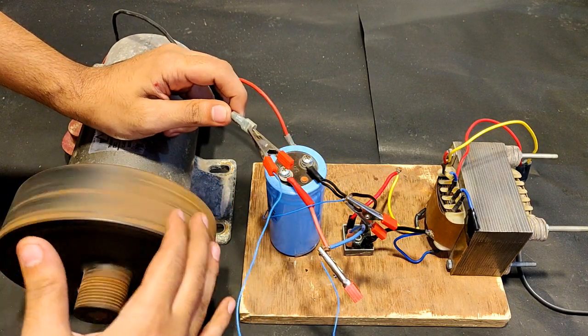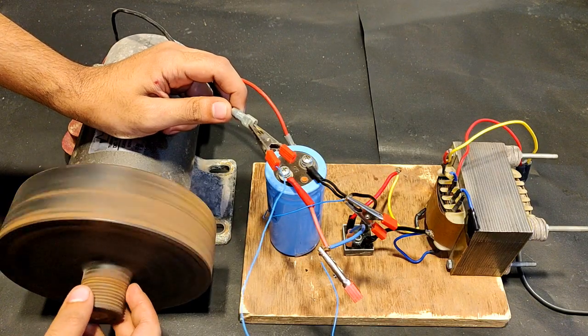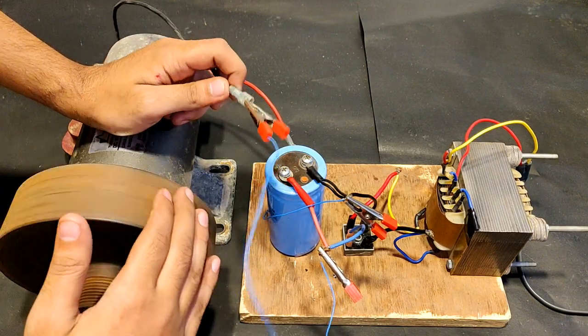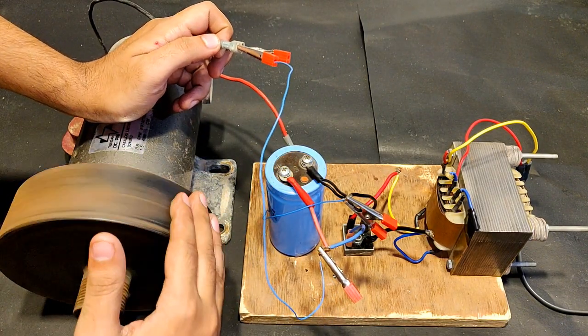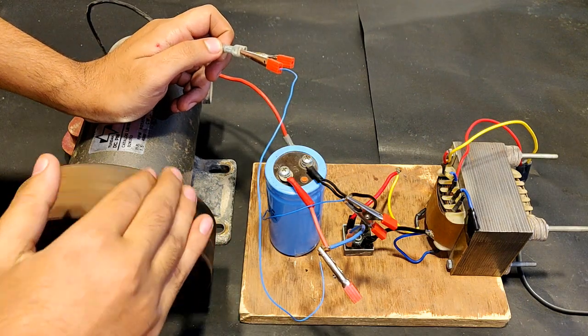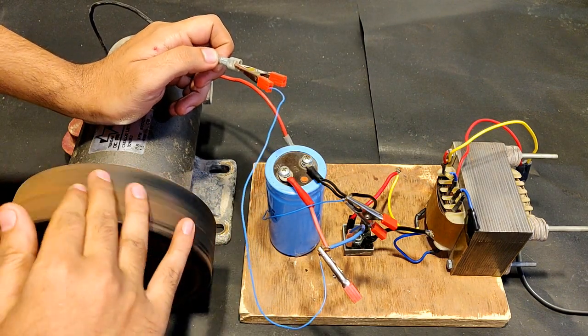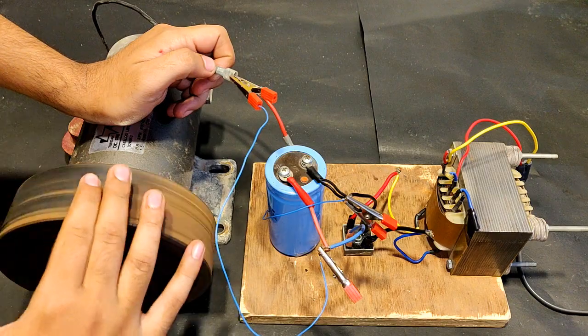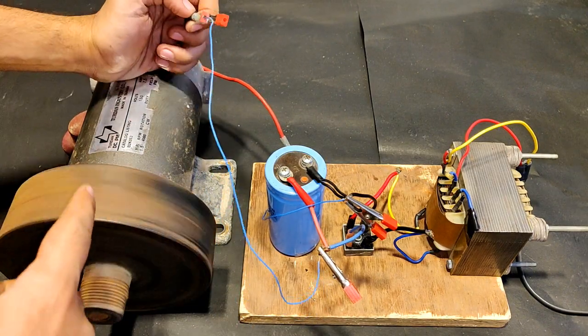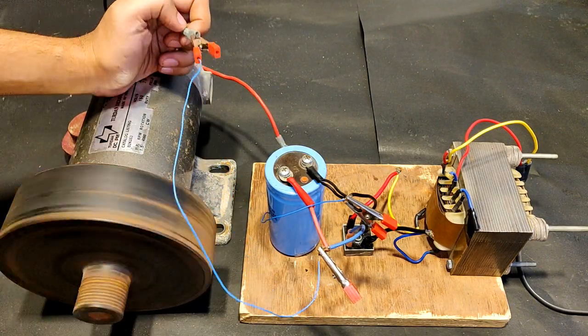You can see that it is running pretty good. A 1.5 HP DC motor that is running flawlessly and it is almost unstoppable. Yeah, it is unstoppable with hands. Of course, it is very strong at 40 volts, and its full power will be seen at 180 volts. At present it's only 40 volts.